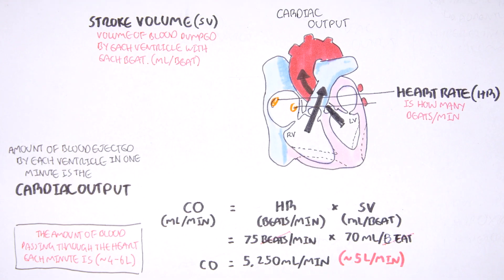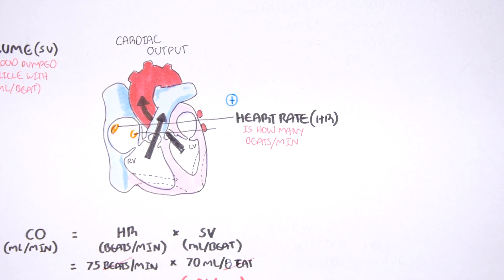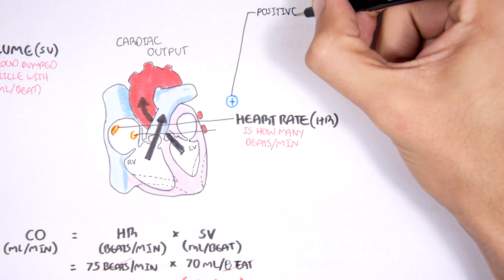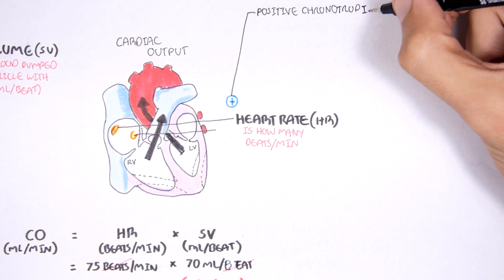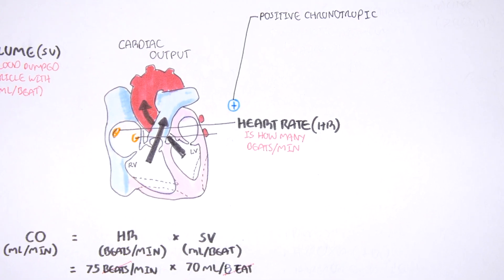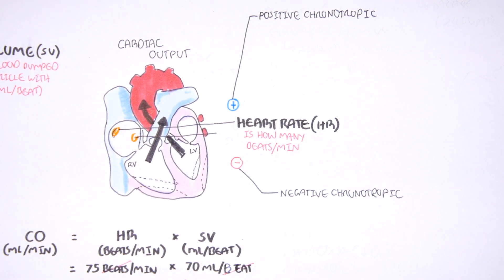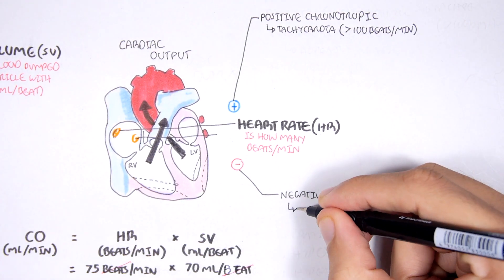Now, back to heart rate. There are factors that can positively influence heart rate, meaning increasing it — these are called positive chronotropic factors, and they can result in tachycardia, which is a fast heart rate over 100 beats per minute. On the other side, you have negative chronotropic factors, which can result in bradycardia, a heart rate below 60 beats per minute.